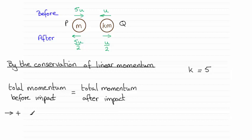So remember momentum is mass times velocity. We look at the total momentum before impact. So that's going to be the mass of p, which we can see is m, and we multiply that by its velocity. Its speed is 5u. It's in the positive sense, so its velocity will be 5u. So mass times velocity there.